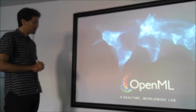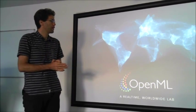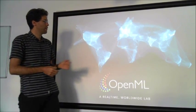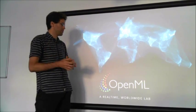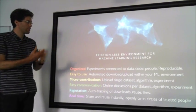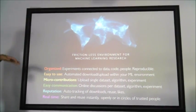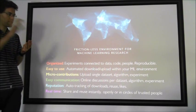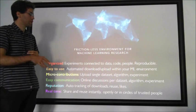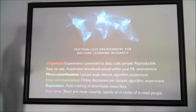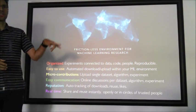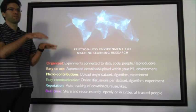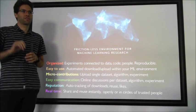This led us to build OpenML. OpenML is a worldwide platform for machine learning. I can release data or publish an algorithm and anybody in the world can immediately use and run it. It's meant to be networked science — a frictionless environment for machine learning research. It's organized: all experiments are organized online, linked to the data, linked to the code, linked to the people. It's all reproducible — if I want to rerun an experiment, it's easy to do. It's easy to use because we integrate it into machine learning environments. If you use our Python libraries, R, or whatever, we integrate OpenML into these tools so you can just run your experiments and the tool takes care of uploading all results to the platform and downloading the data.